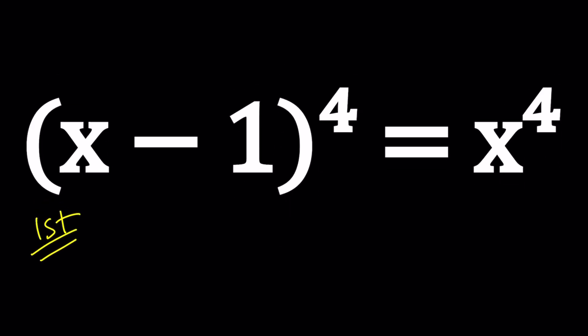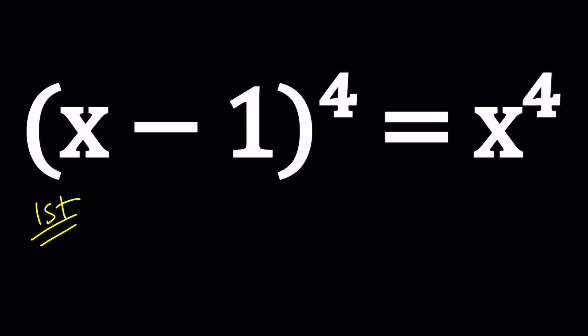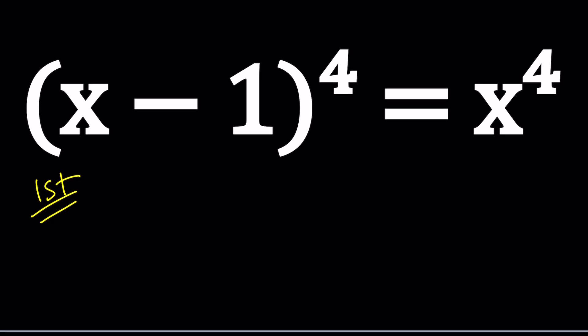For the first method, I'm going to expand the left-hand side by the binomial theorem. Remember the coefficients 1, 4, 6, 4, 1. This is going to be x^4 - 4x^3 + 6x^2 - 4x + 1. That's the left-hand side and the right-hand side is just x^4. Now you can see that x^4 cancels out, leaving us with a cubic.